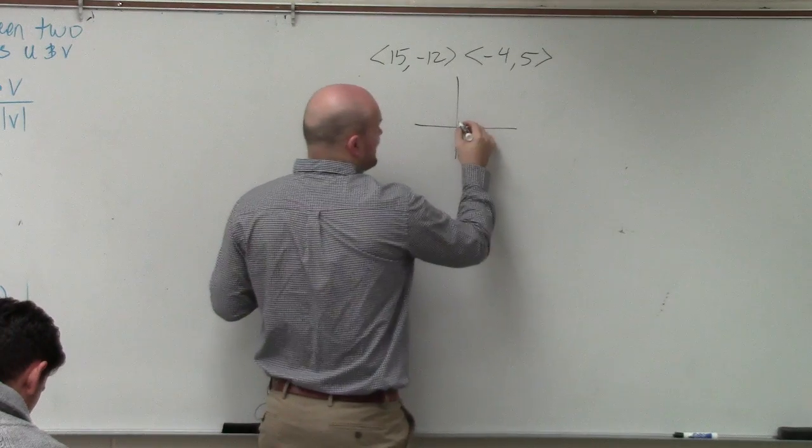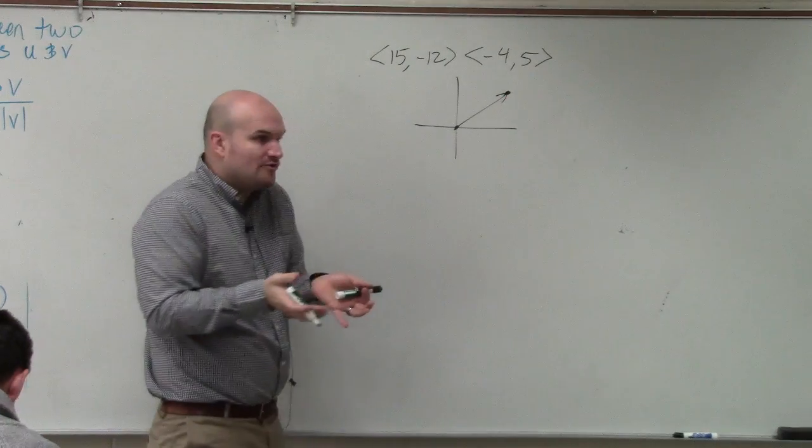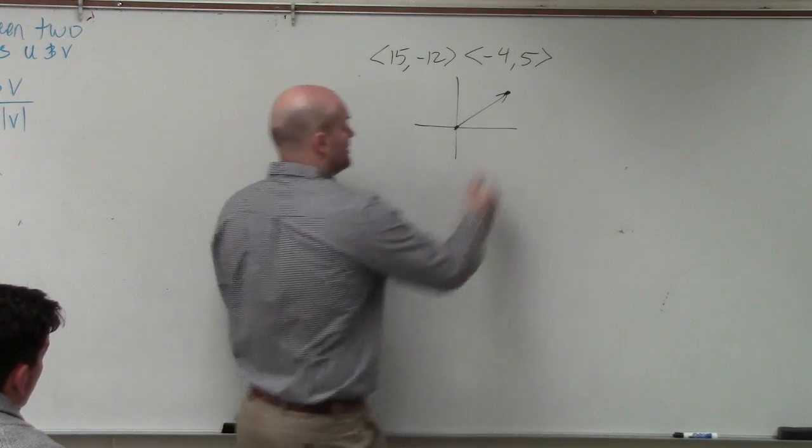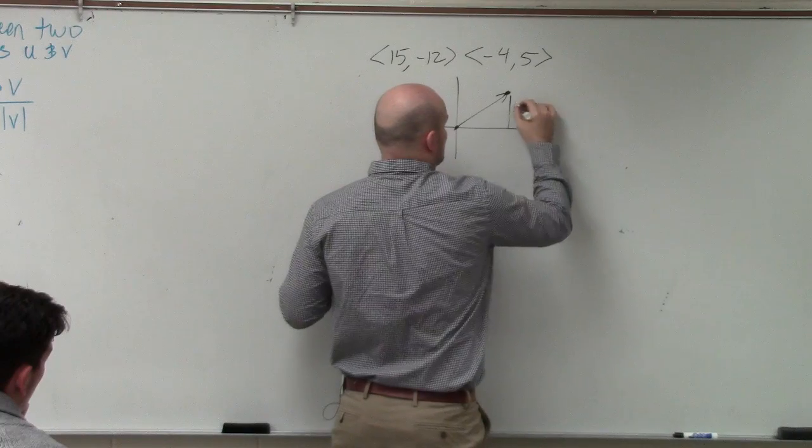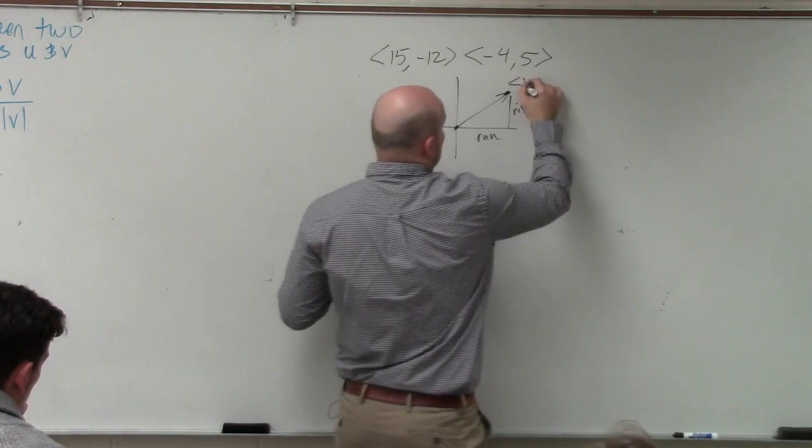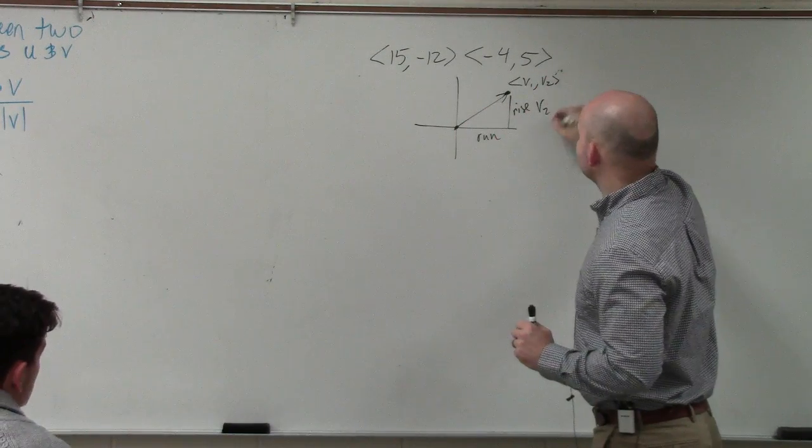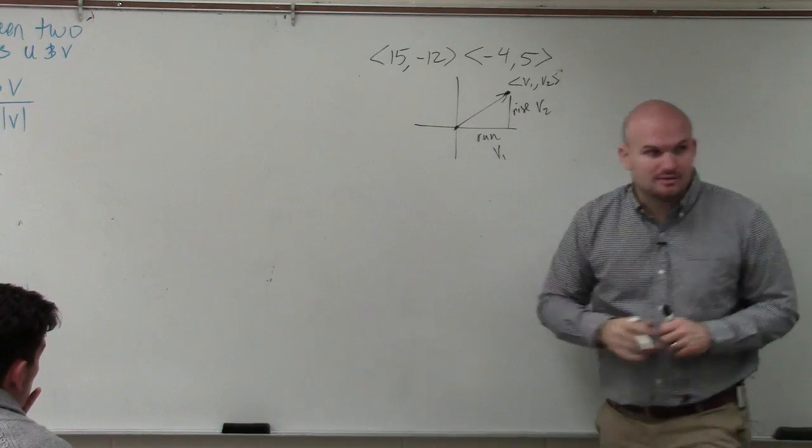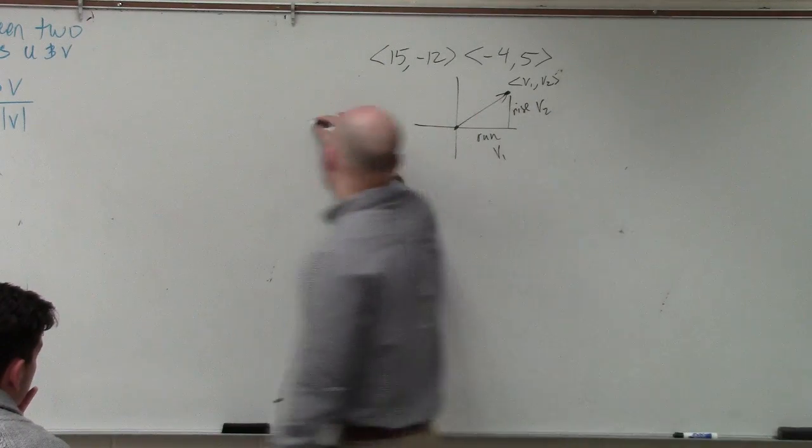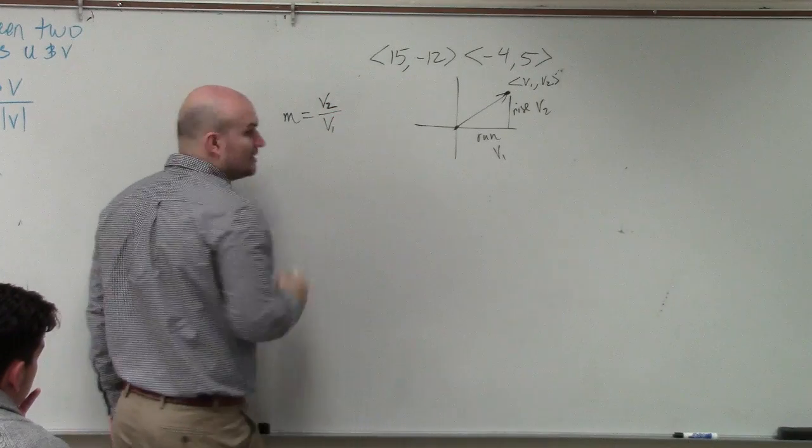So if I have two vectors, let's just look at a vector in component form. If I have a vector in component form, I can find the slope, which is the rise over the run. Basically, what I want to do is if here's my vector v1, v2, the rise is v2, and the run is v1, correct? So therefore, we could technically say the slope is v2 over v1.